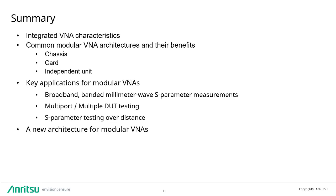In summary, this has been a short discussion about the application advantages of modular architectures for VNAs. I have discussed the characteristics of typical integrated VNAs and contrasted that with features and benefits of different types of modular VNAs. I covered in further detail three different applications where modular VNAs have advantages and introduced a new modular VNA architecture that brings unique capabilities to long-distance S-parameter applications.